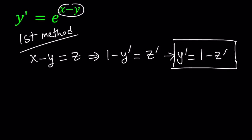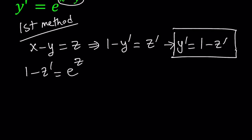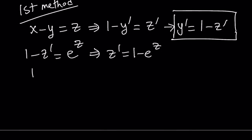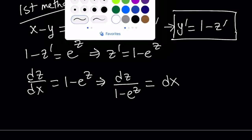We can use this in our equation and also replace x minus y with z. Let's do both replacements: we get 1 minus z prime equals e to the power z. From here let's isolate z prime — that becomes 1 minus e to the power z. So z prime, or dz over dx, equals 1 minus e to the power z. From here we separate variables because this is a separable equation: dz over 1 minus e to the power z equals dx, and then we integrate both sides.